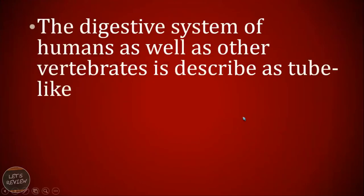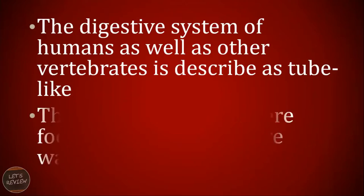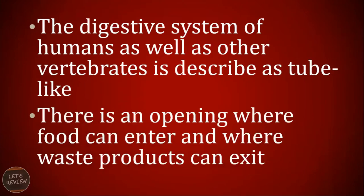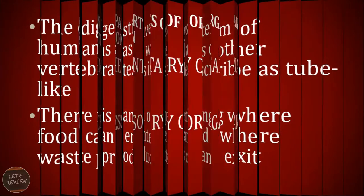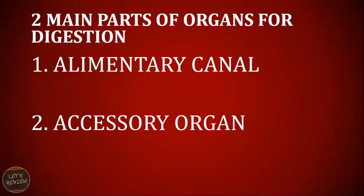The digestive system of humans, as well as other vertebrates, is described as tube-like. We can say it's tube-like because there is an opening where the food can enter and waste products can exit. The two main parts of the organs for digestion are the alimentary canal and the accessory organs.